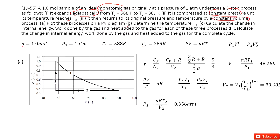The first question asks you to plot the PV graph. Initially, PV is given. V1 we don't know yet, but we know it moves adiabatically to this point at T2, V2, P2. Then it moves at constant pressure back to V1, and then at constant volume back to the origin point.